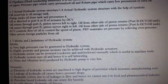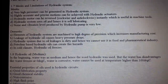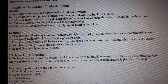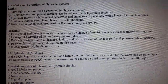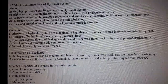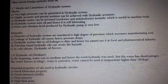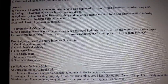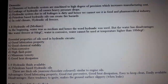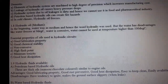Merits and demerits of hydraulic system. Merits: very high pressure can be generated; highly accurate and precise motion can be achieved with hydraulic actuators; the hydraulic motor can be reversed — clockwise and anti-clockwise instantly, which is useful in machine tools; the system uses oil and hence is self-lubricating; noise and vibration levels are very low. Demerits: elements are machined to a high degree of precision, increasing manufacturing cost; leakage causes heavy pressure drops; oil leakage makes the system dirty, so it cannot be used in food and pharmaceutical industries.